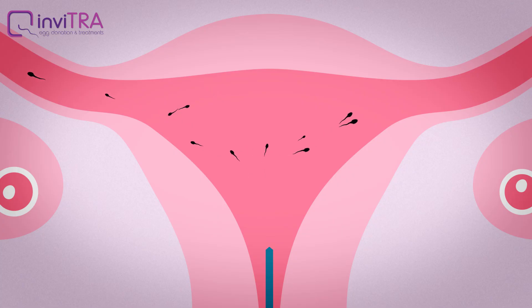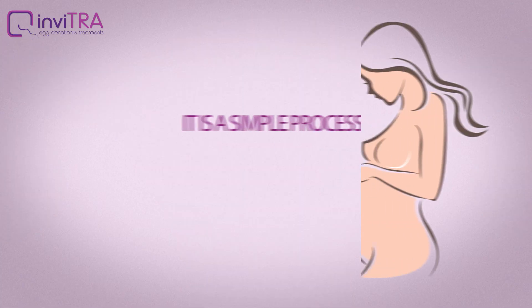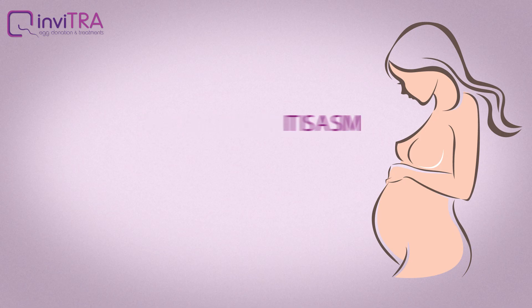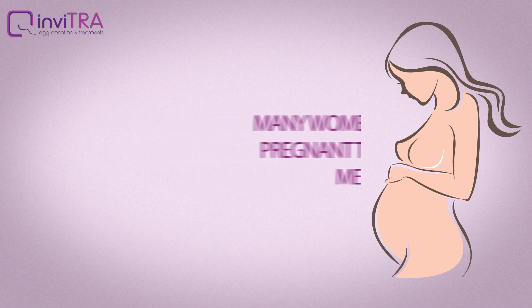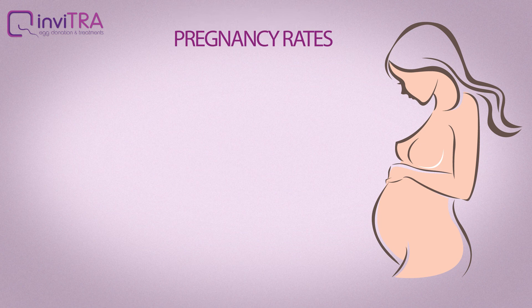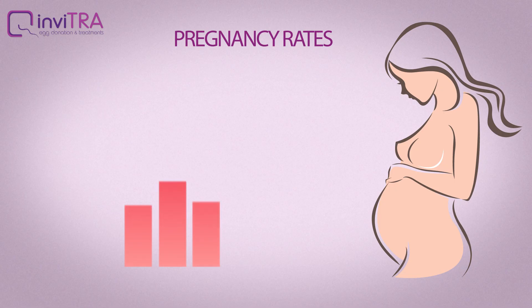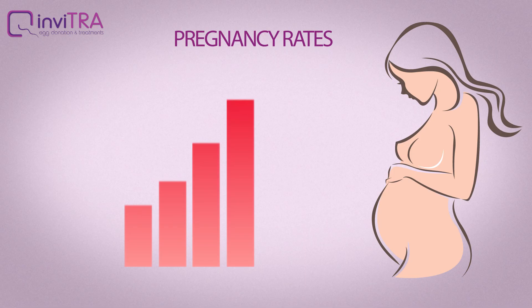Even though it is a simple process, its effectiveness is proven and many women can become pregnant thanks to this method. It should also be mentioned that pregnancy rates are cumulative. Scientific studies show that the possibility of achieving pregnancy through artificial insemination increases when a maximum of four consecutive artificial insemination cycles are performed.